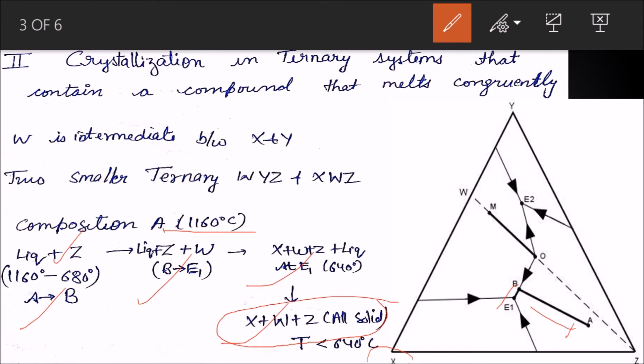Now what of point M? You see point M here. Crystallization of composition M, which lies on the binary system of W and Z. Since this is a binary system, only phase W and Z will be found in the final crystallization product. Thus crystallization will stop when the liquid composition reaches point O.